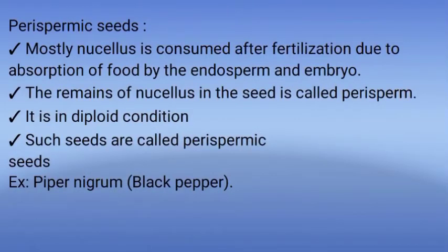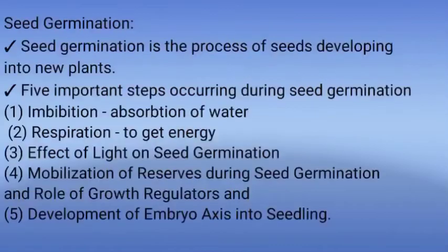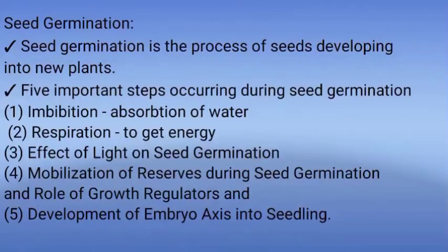Perisperm is in a diploid condition. An example of a perispermic seed is Piper nigrum, which is black pepper.